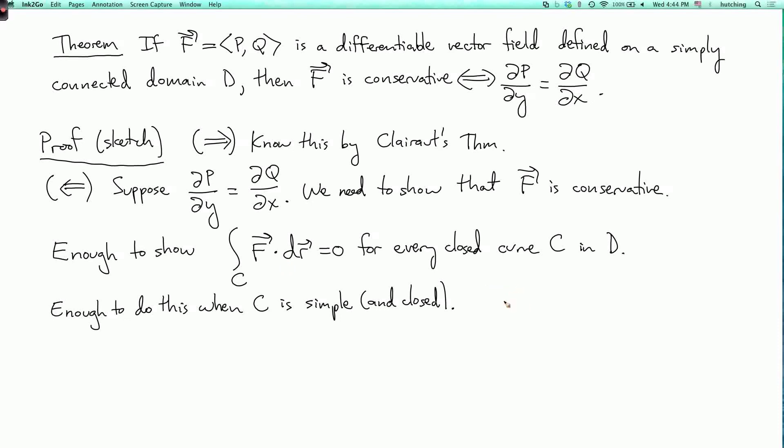So we know that if C is simple, then we know by the Jordan curve theorem that C bounds a region R. And now we have to use the fact that D is simply connected. Since D is simply connected, R is a subset of the domain D.